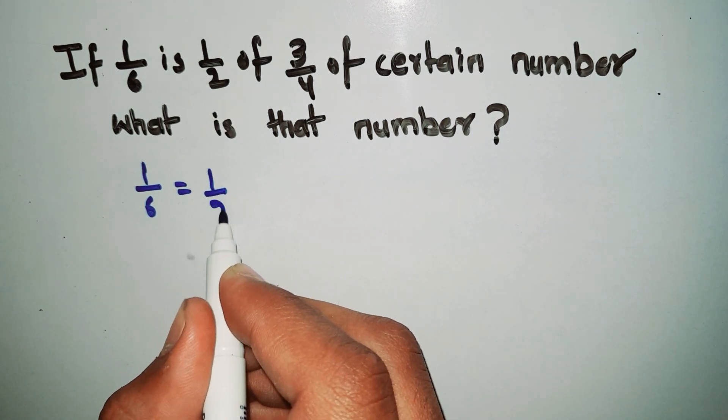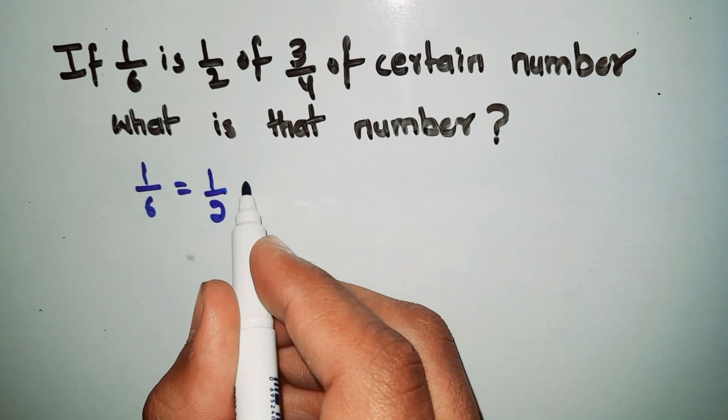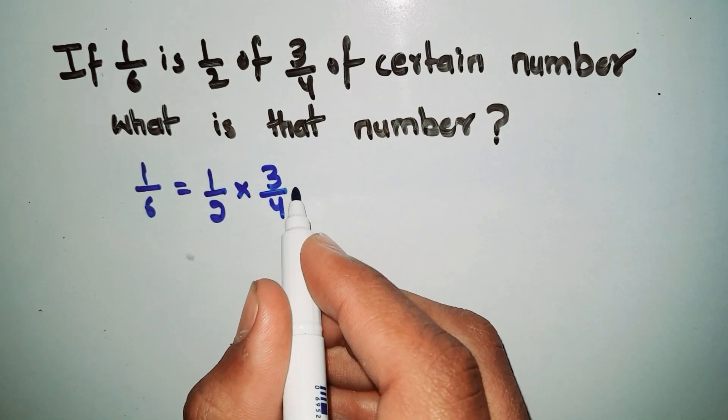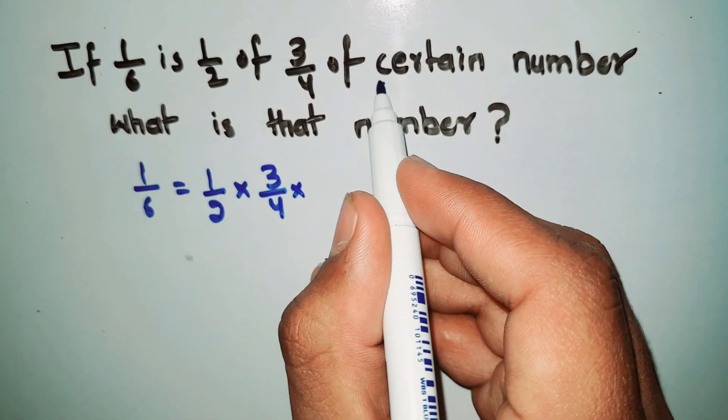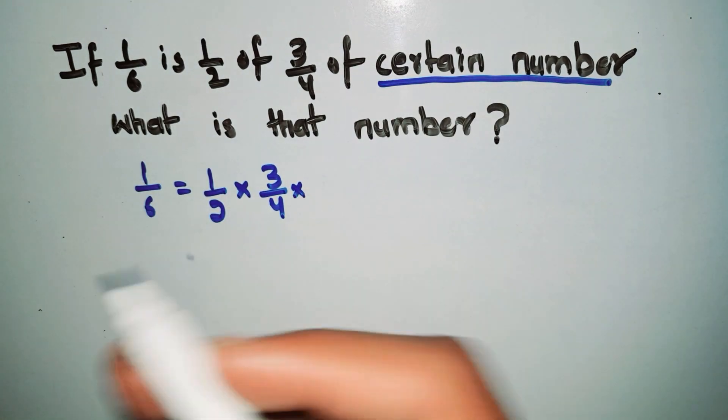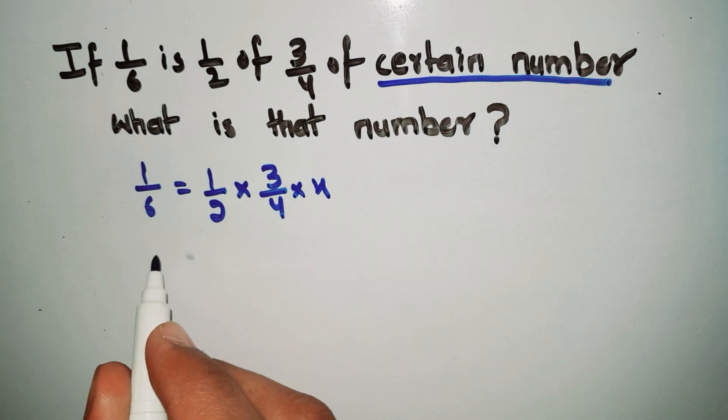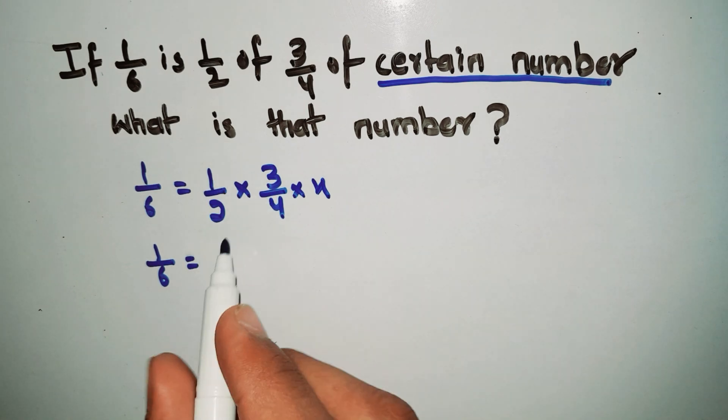1/2 of means multiply, 3/4 of means multiply. Since we don't know the number, we write X. So we write 1/6 equals 1/2 times 3/4 times X.